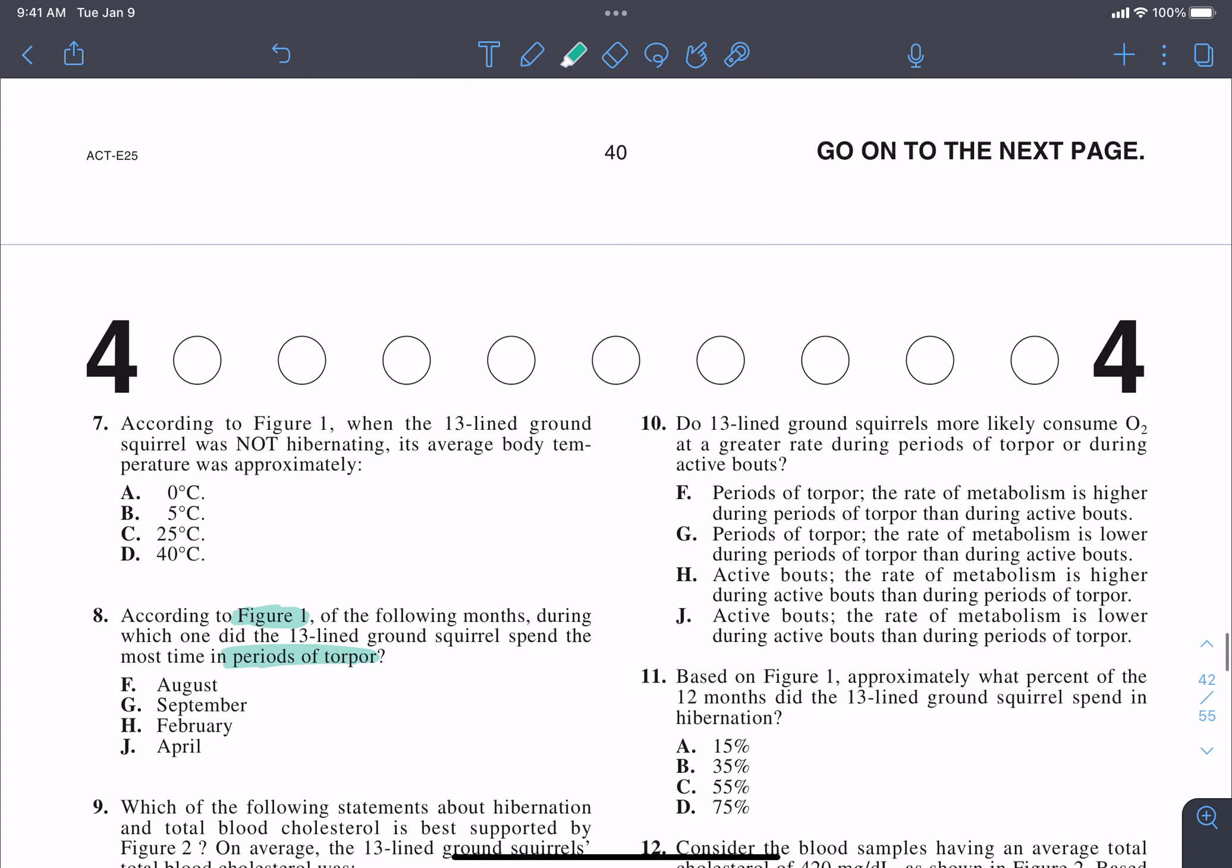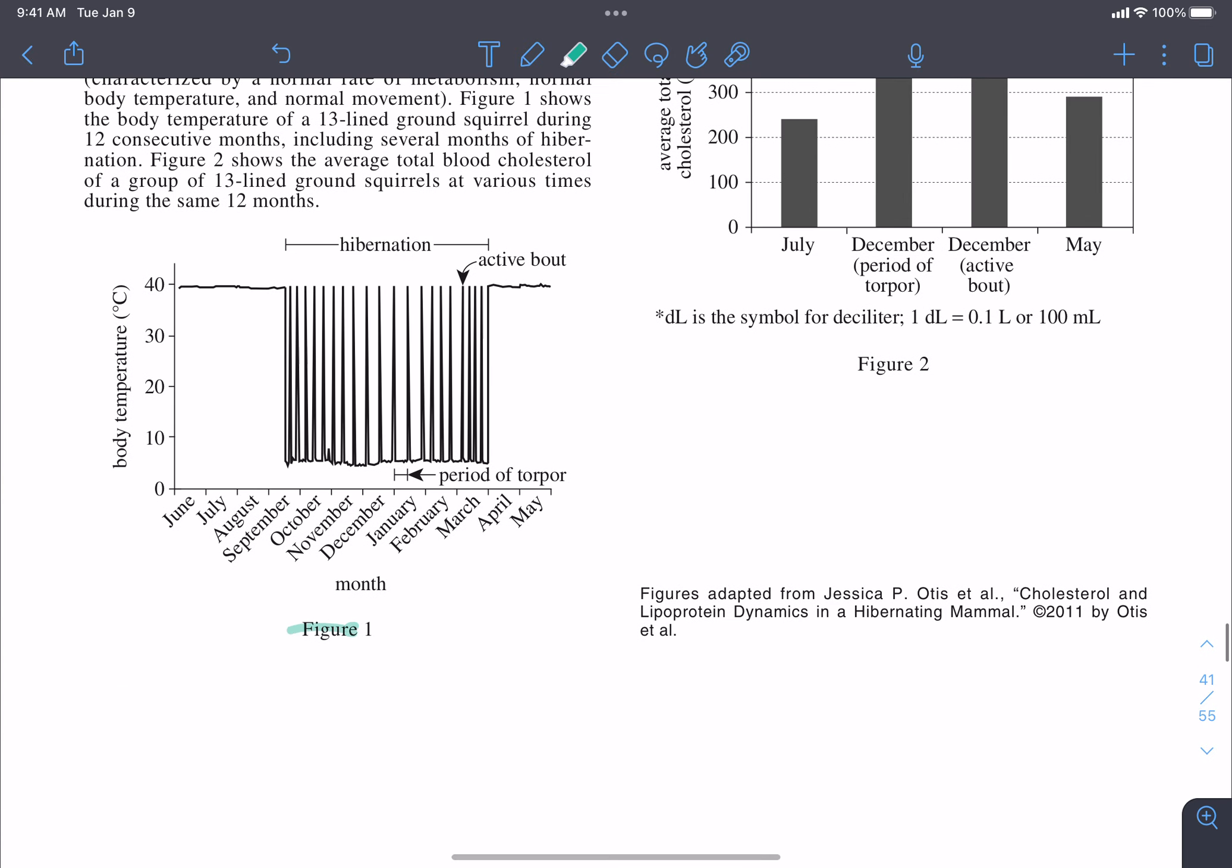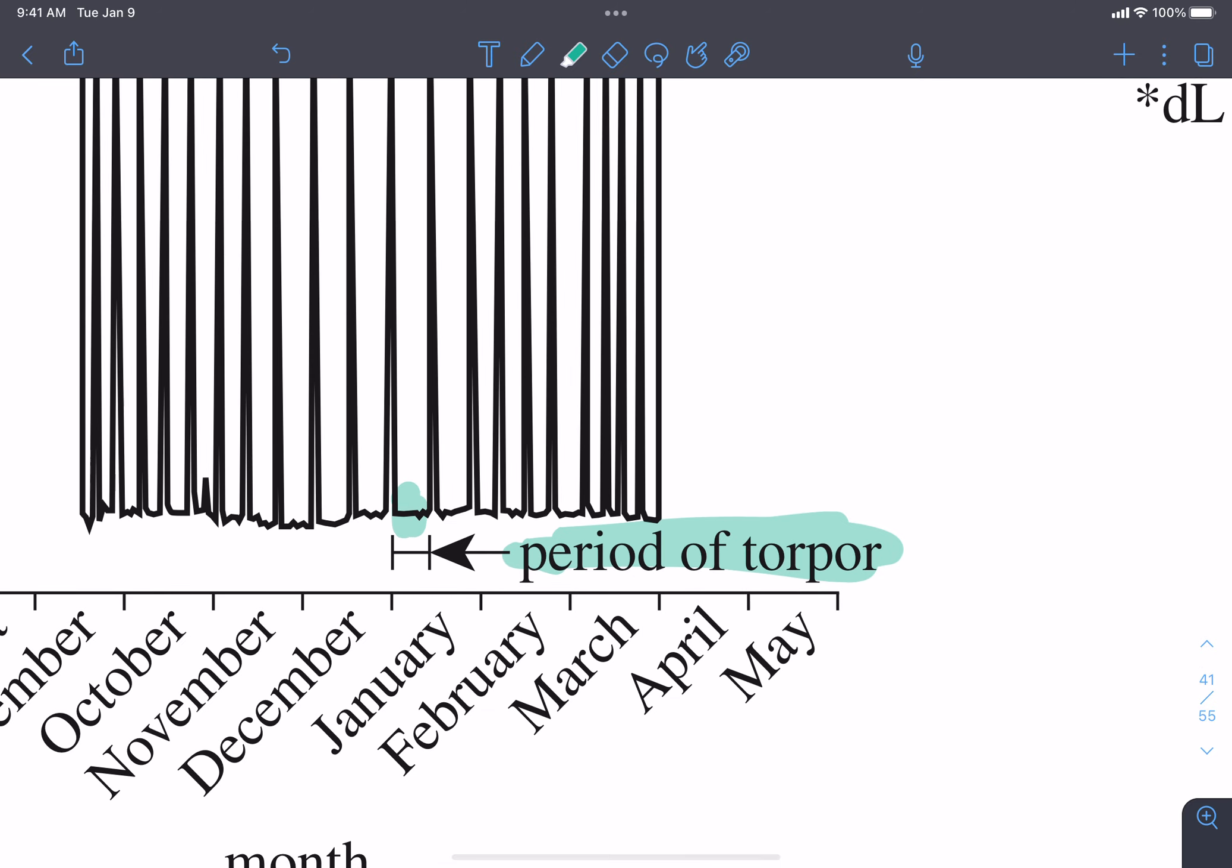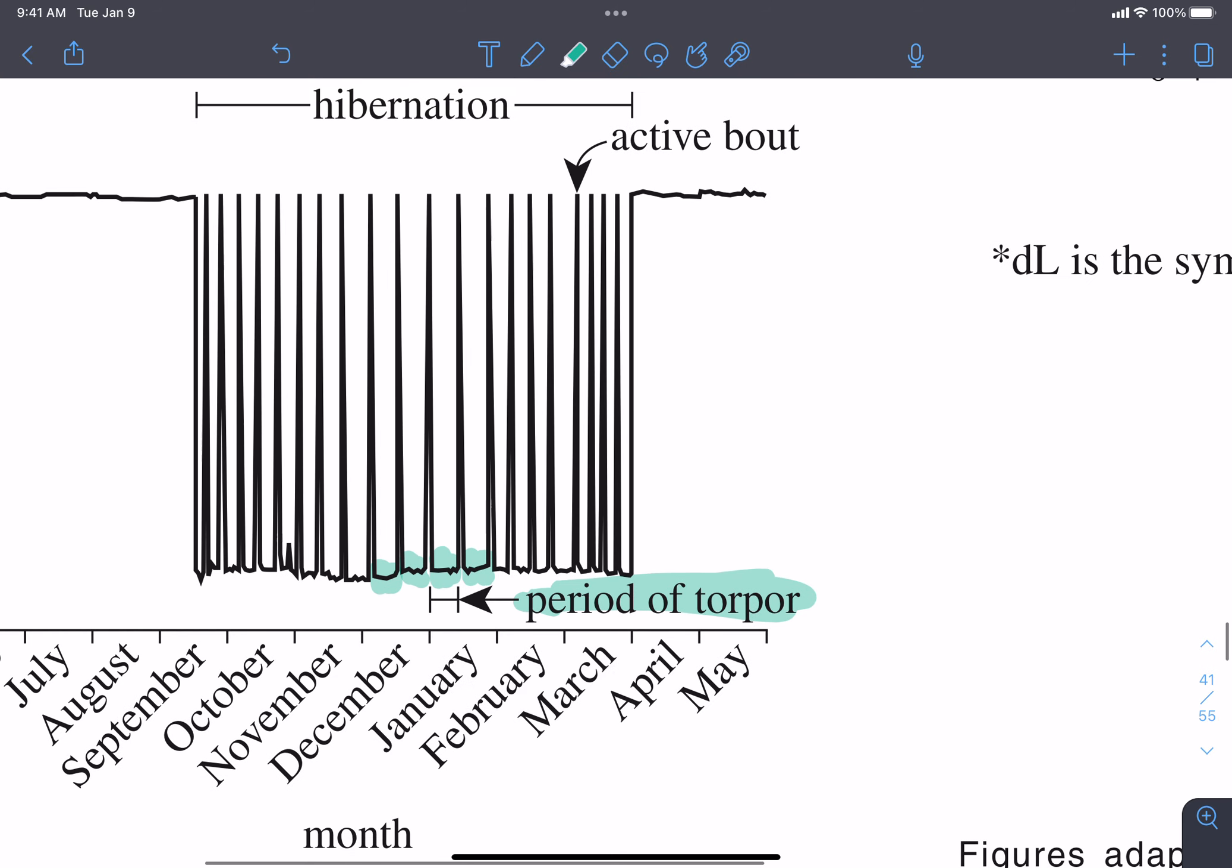So we're going to look at Figure 1 and we're going to find periods of torpor. So here's Figure 1. Where is periods of torpor? Well, that's what it is right there. We can see that periods of torpor are going to be these horizontal lines that occur at the bottom portion, these whole areas that are between the spikes are going to be your periods of torpor.